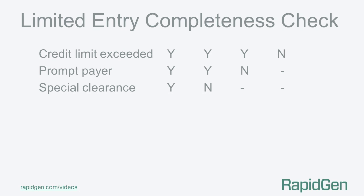In our second example we still have three conditions, but two of the rules have dashes in them. So how do we know if this is a complete table? Again we use a simple mathematical procedure.